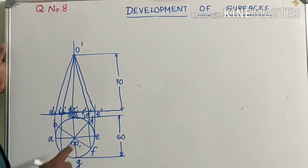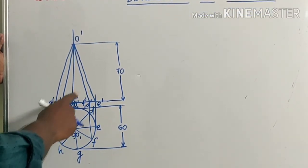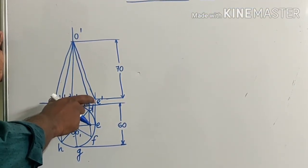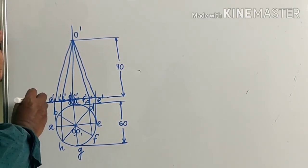Greetings and welcome to the graphics class. Today we are going to discuss question number 8 of development of surfaces. A cone of base diameter 60 mm and height 70 mm is resting on HP on its base. A section plane inclined at 35 degrees to HP, perpendicular to VP, and passing through the midpoint of the axis cuts the solid into two parts. Draw the development of the sectioned solid.